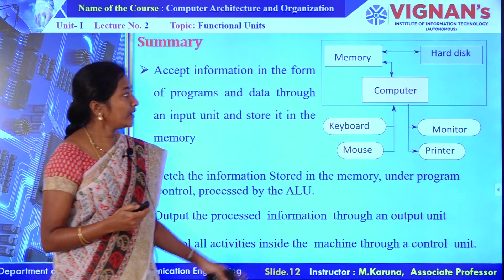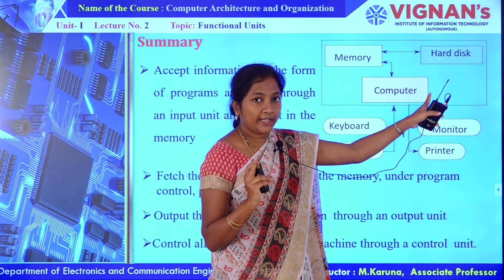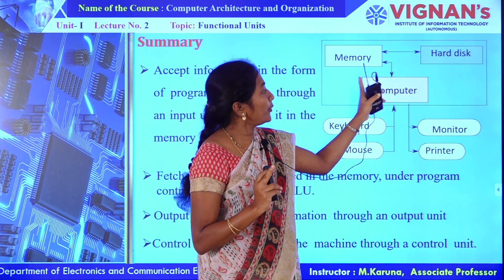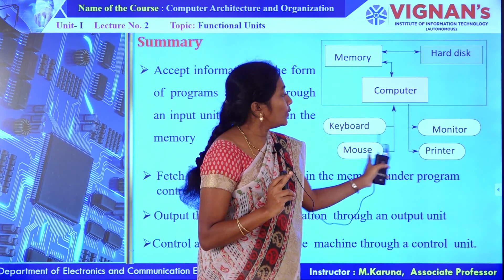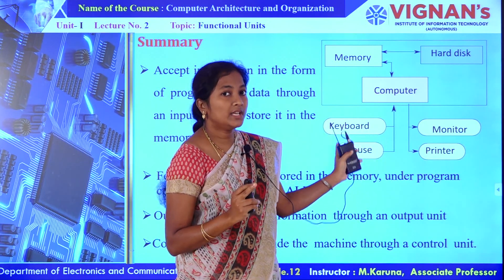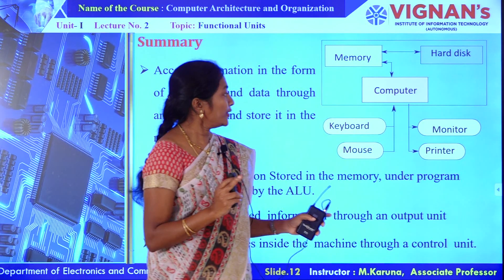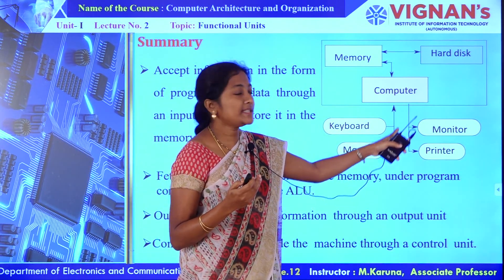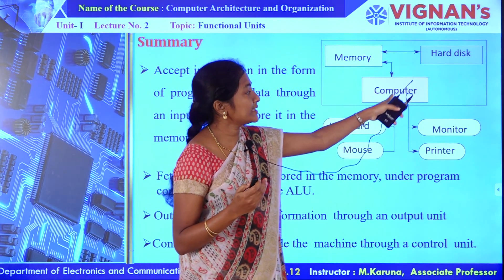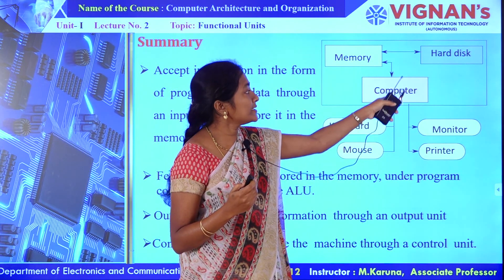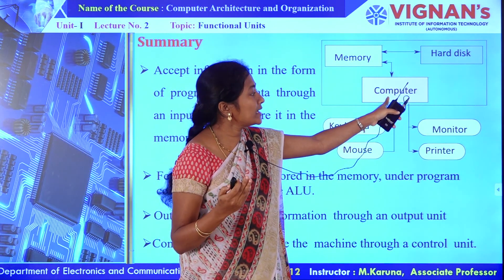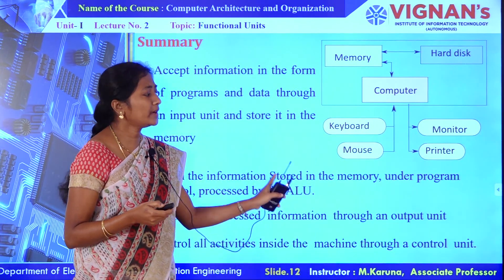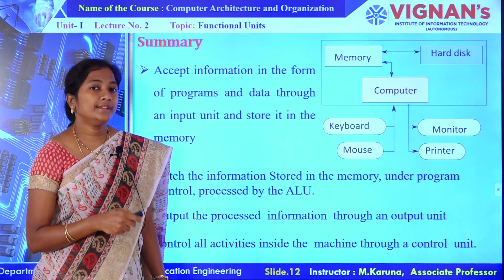Let us summarize the topic of functional units. Whenever you switch on the computer, whatever operating system software is stored in the hard disk will be copied to the memory. After processing that OS, all the devices will be accessed — input devices and output devices. The computer accepts information from the outside world through keyboard or mouse, and that information will be stored in memory or processed by the computer directly. After processing that data or information, the results will be transferred to the outside world through monitor or printer. This is a summary of the functional units existing in the computer.